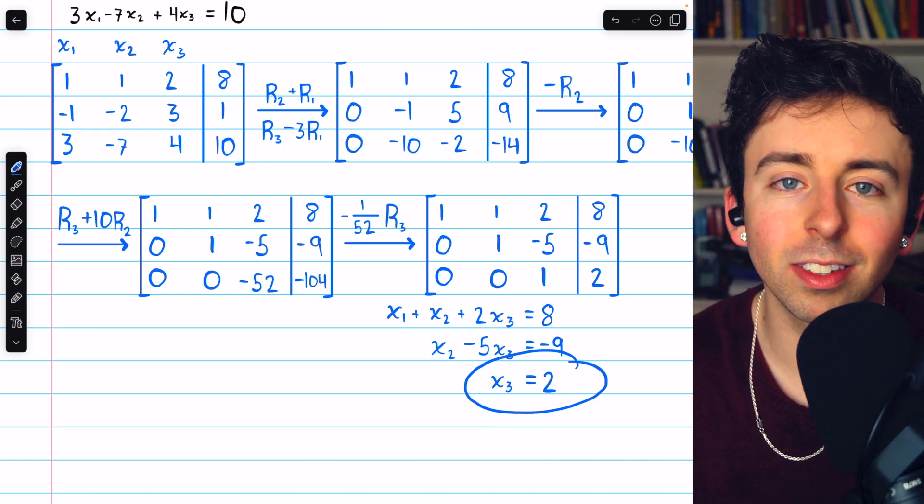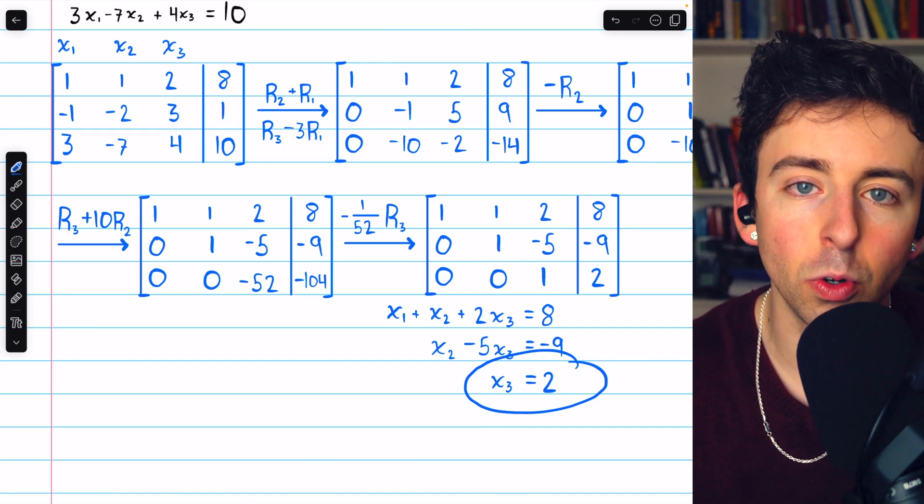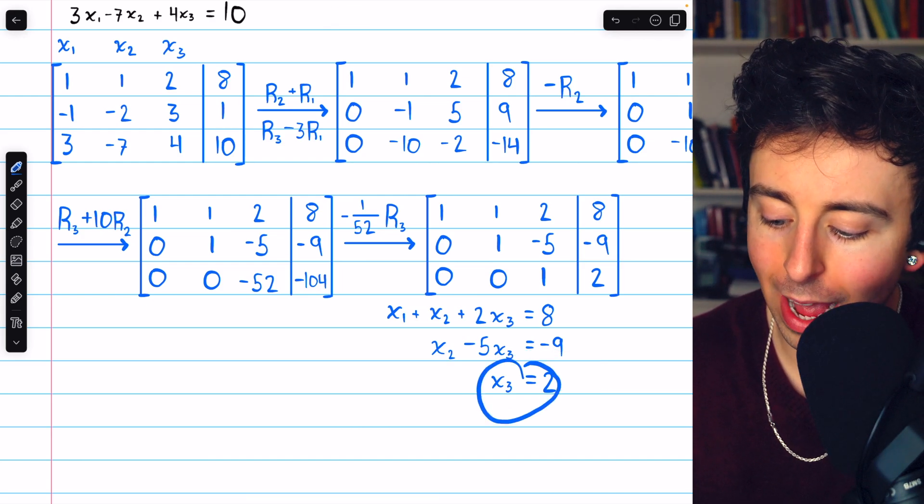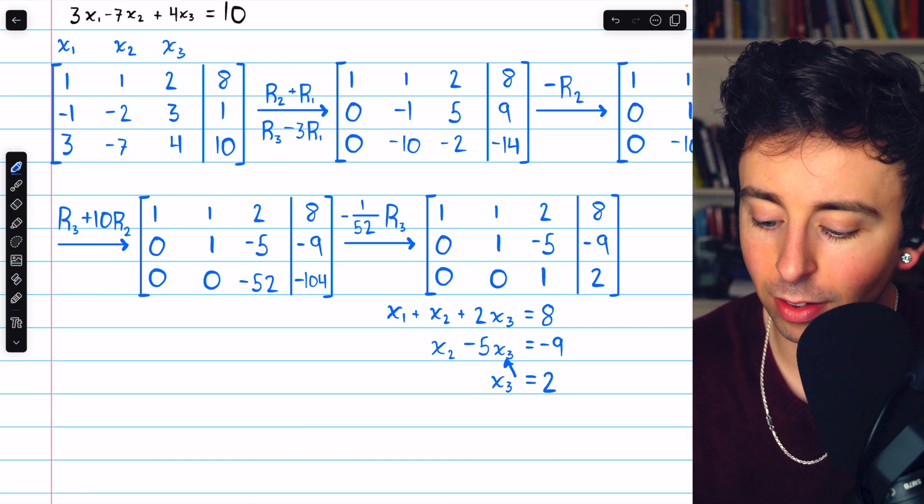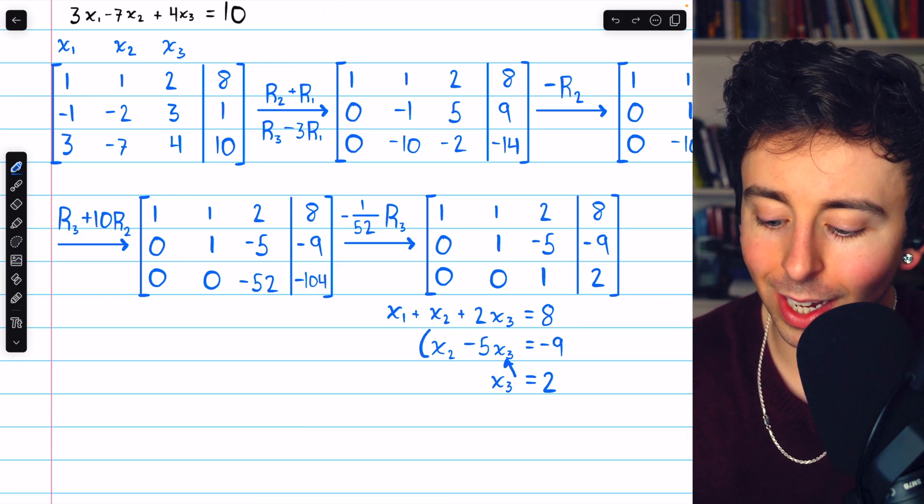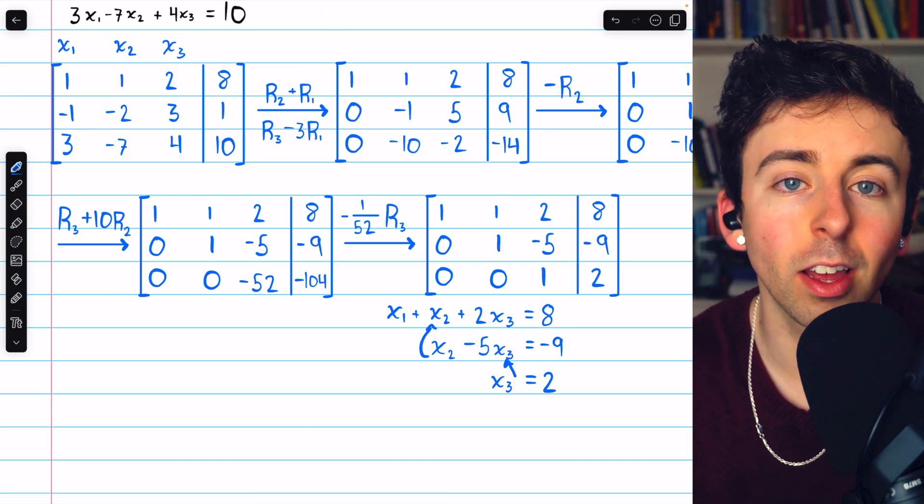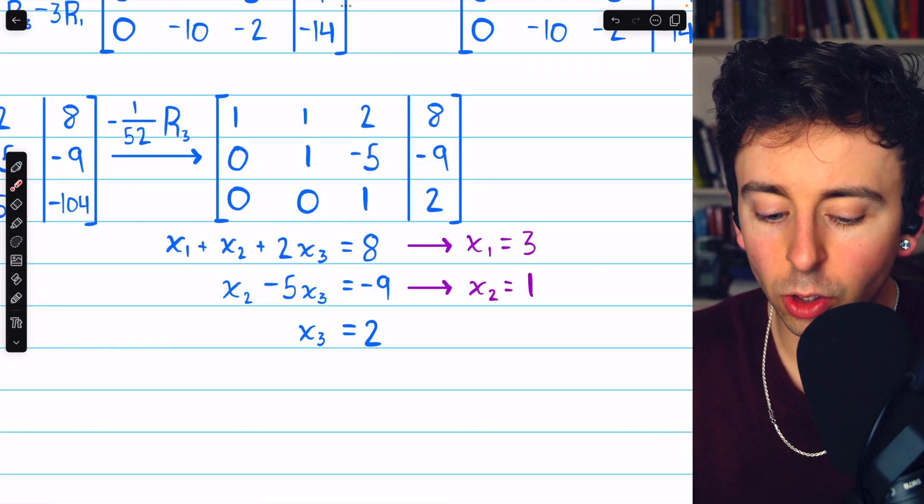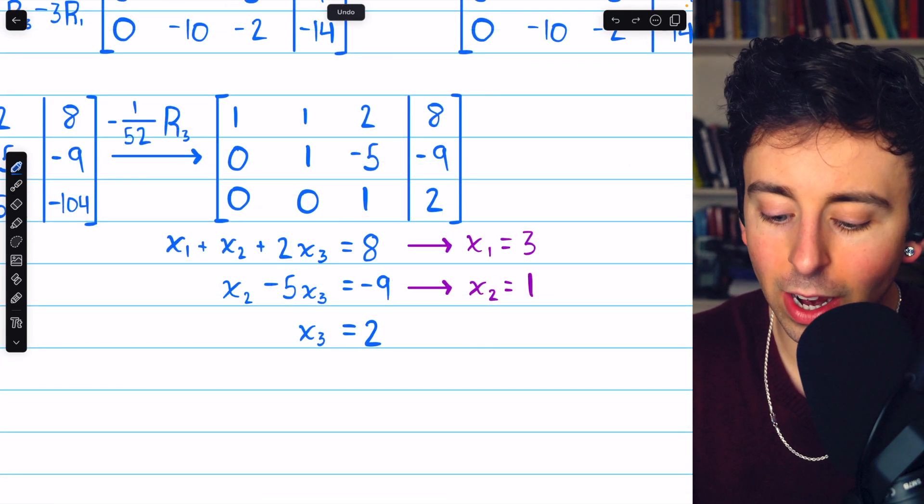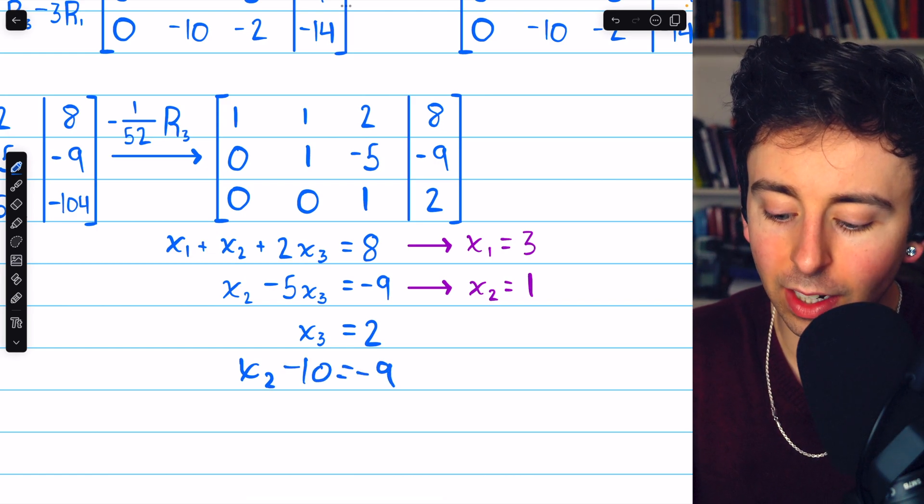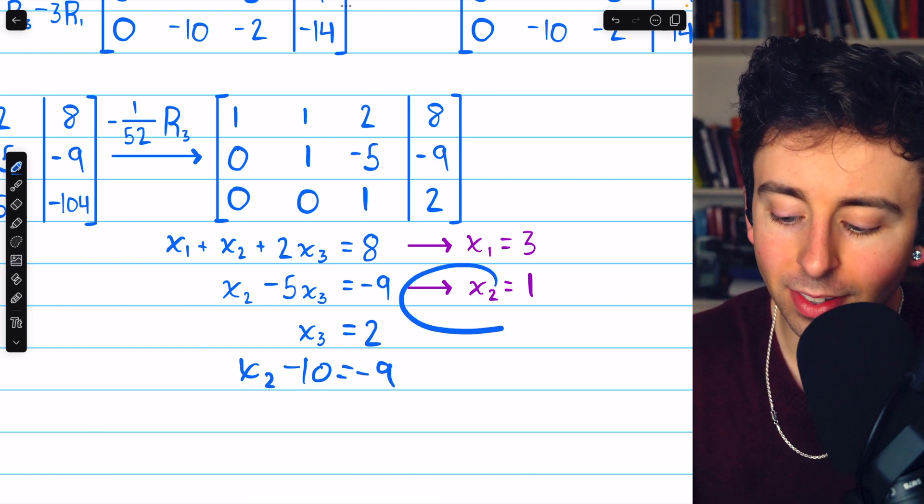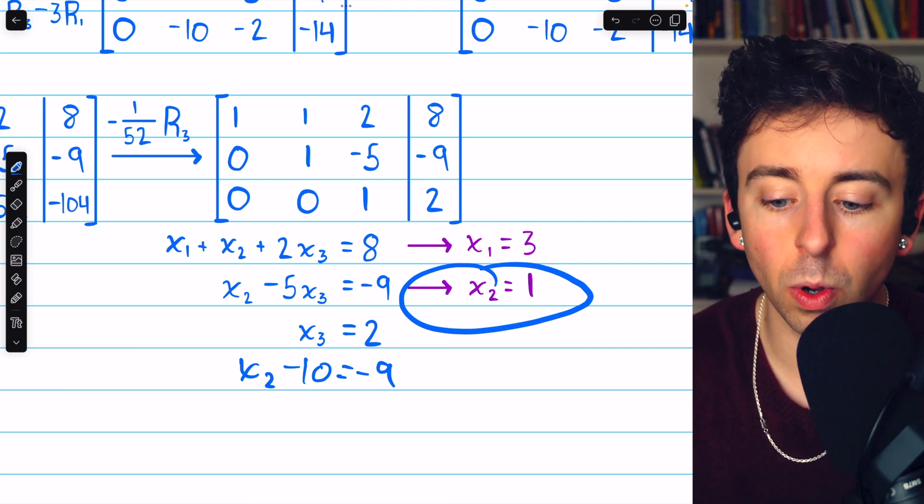So now we're doing what's sometimes called back substitution. Working backwards from x3 equals two we can plug that into the above equation to solve for x2 and then plug that into the above equation to solve for x1. So if x3 equals two plugging that into this equation we would have that x2 minus 10 equals negative nine. So adding ten to both sides we get that x2 equals one.